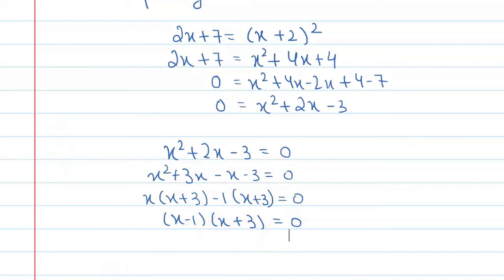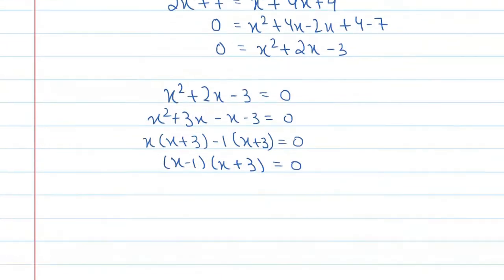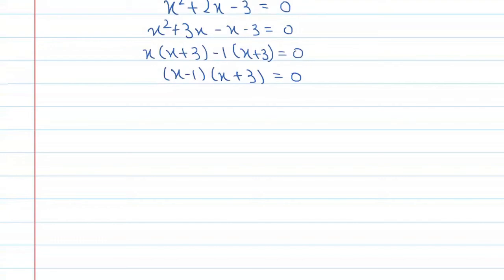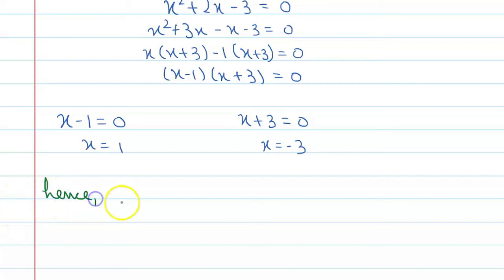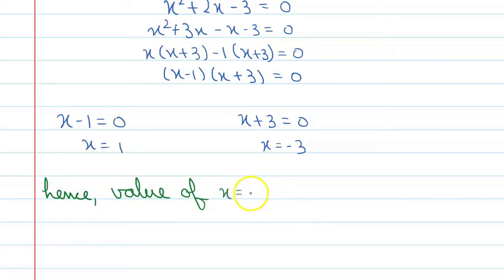To find the x values, we set each linear factor equal to 0 one by one. x minus 1 is equal to 0, so x is equal to 1. x plus 3 is equal to 0, so x is equal to minus 3. These are the values of x, so here we have our final answer.